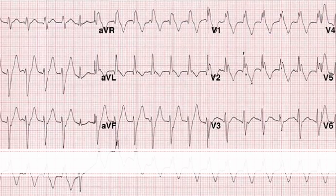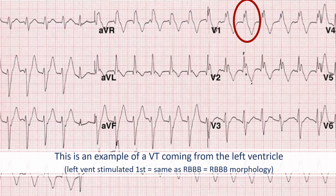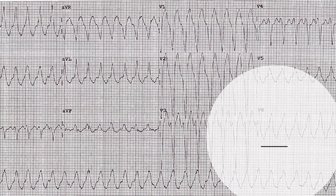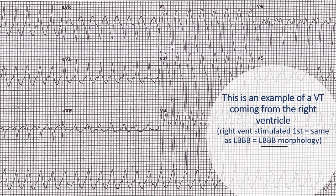Looking at this ECG showing broad complex regular tachycardia — VT — if V1 shows right bundle branch block morphology, we know the VT focus is in the left ventricle. But looking at our ARVC case ECG, it shows left bundle branch block morphology in V1, so we automatically know the focus is in the right ventricle. VTs associated with ARVC are almost always left bundle branch block morphology — and now we understand why. So: a ventricular tachycardia with left bundle branch block morphology should make you think ARVC.